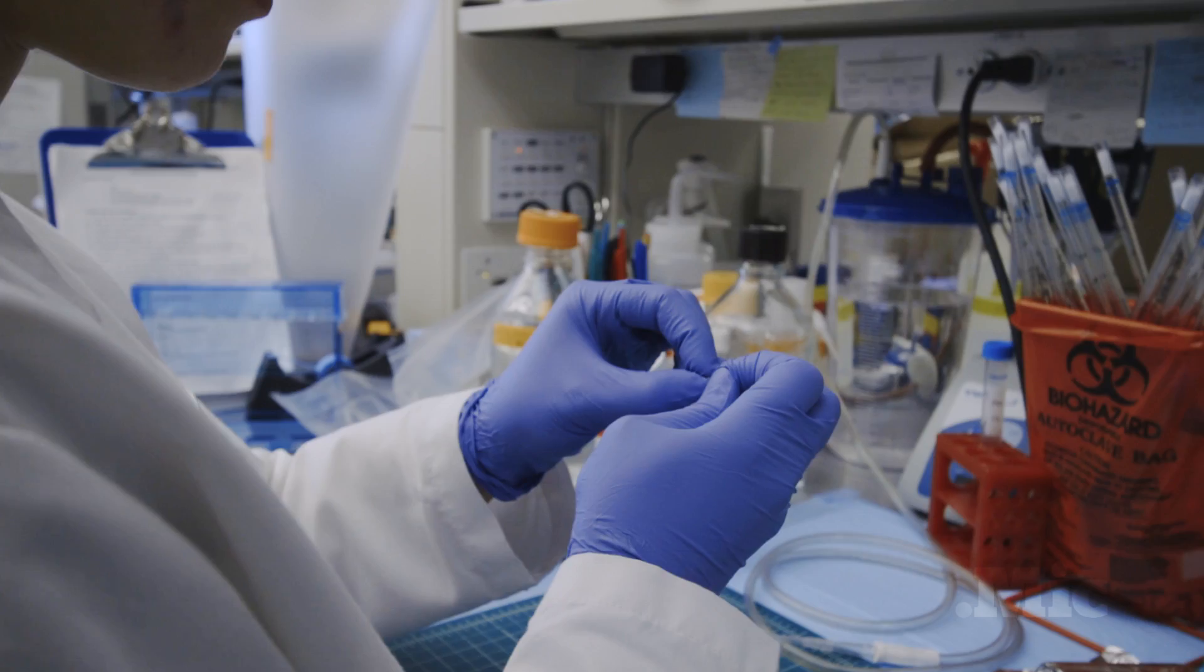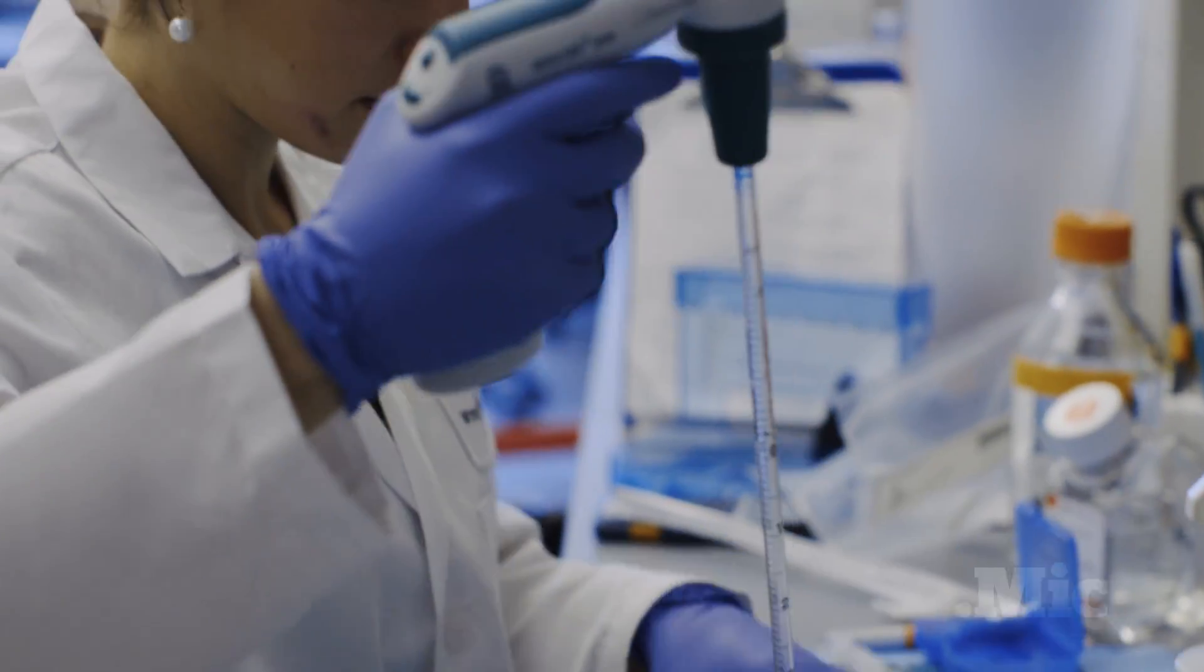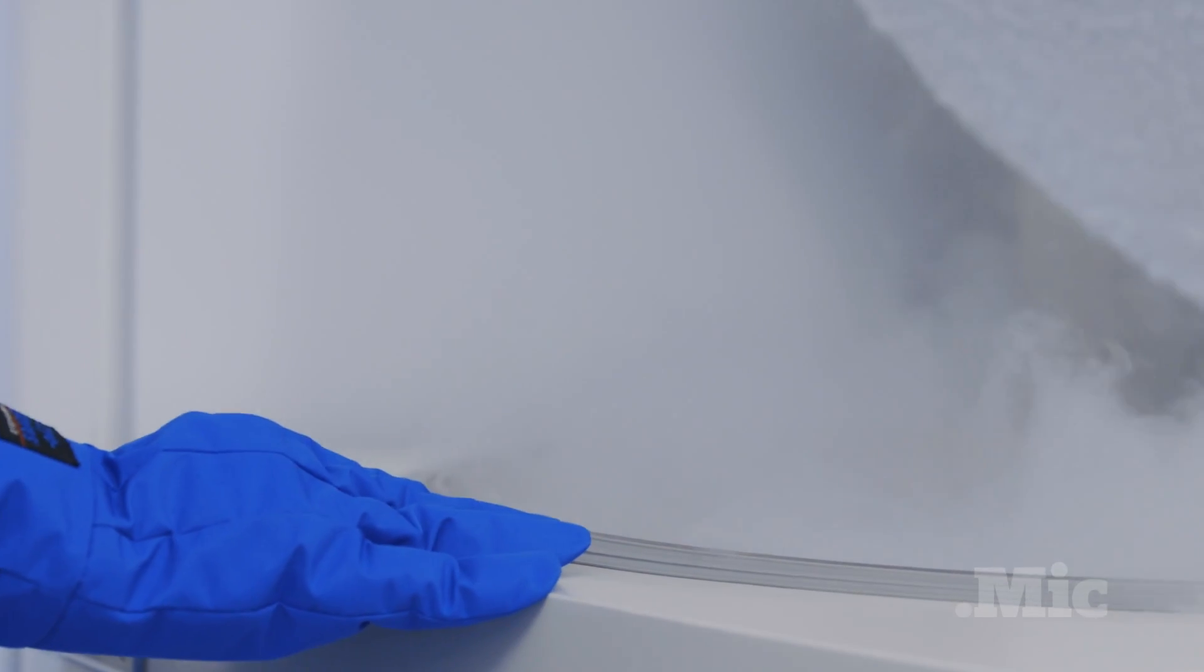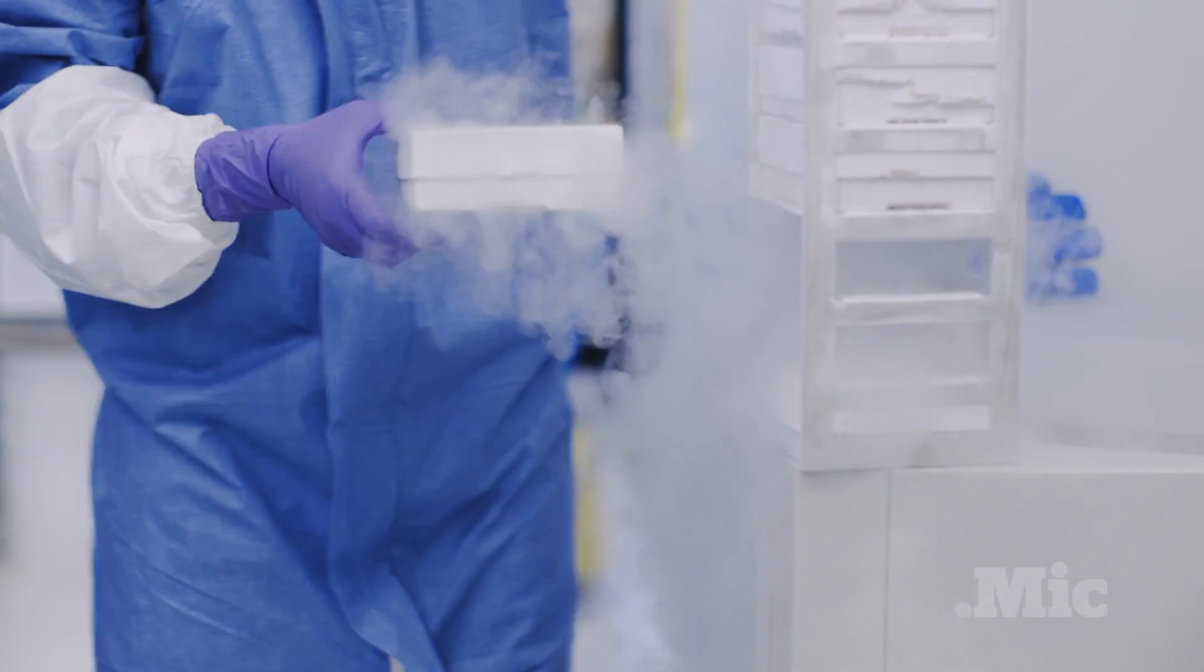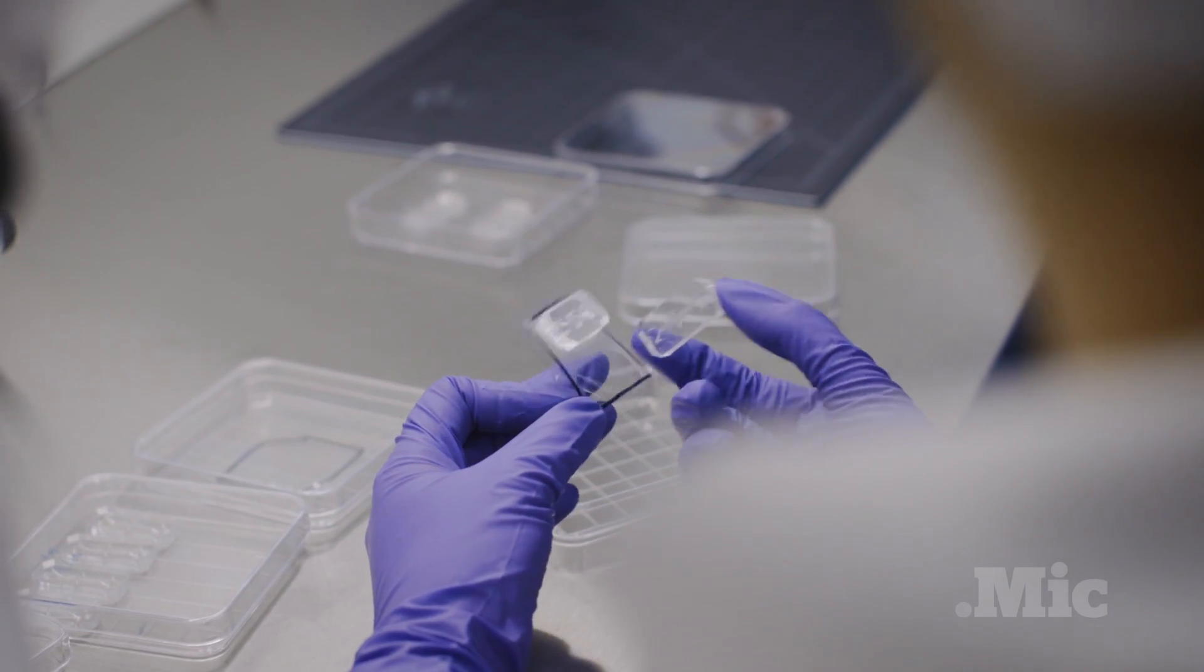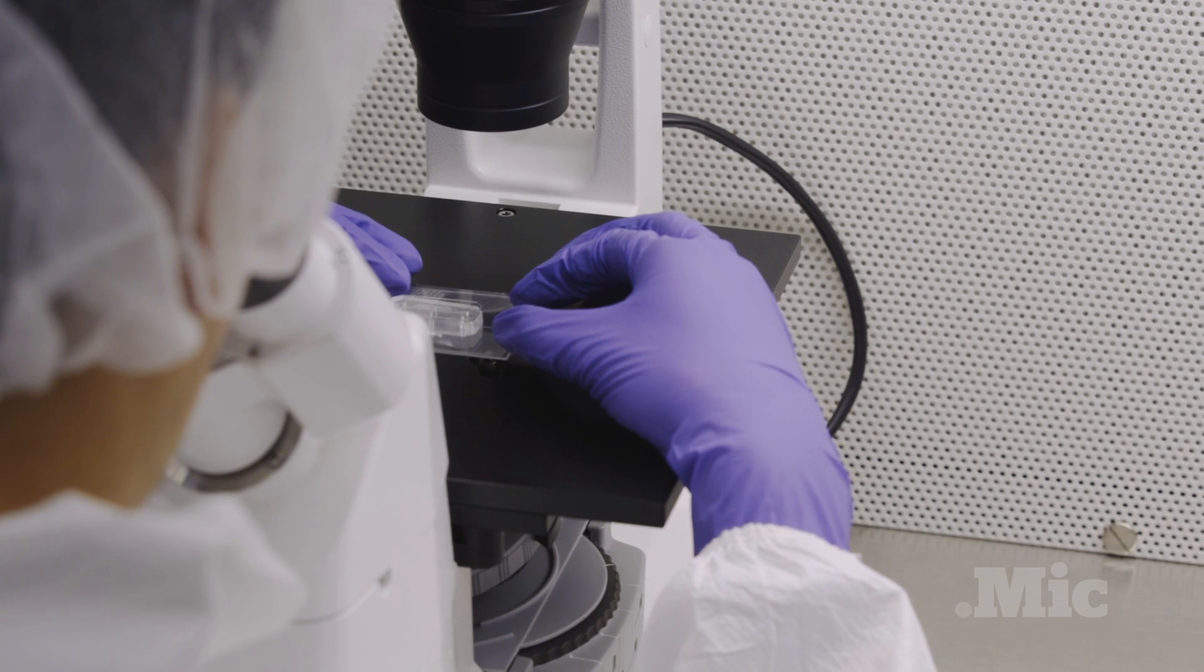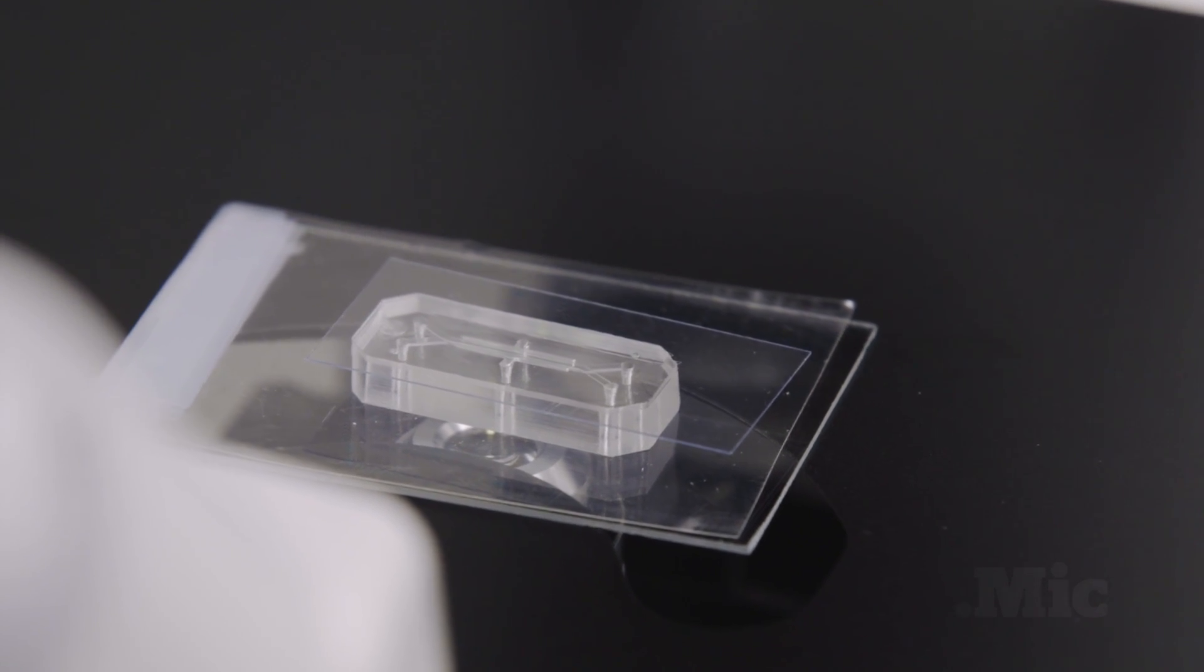That means subjecting animals to the dangers of untested drugs. Many of those tests don't even predict how the drugs will work in humans, which can lead to the drug failing in clinical trials. The great thing about the organs on chips is that you can work on the mechanism of how it works on human, as opposed to work years on mouse and then find out it's different in human.